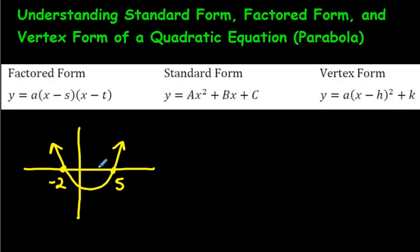Let's say here's your parabola. Let's say this spot is like negative 2 and over here is like positive 5. What you can do with factored form is, well, negative 2. What you do is the opposite. You'd have x plus 2 right here. And over here you'd have x minus 5.